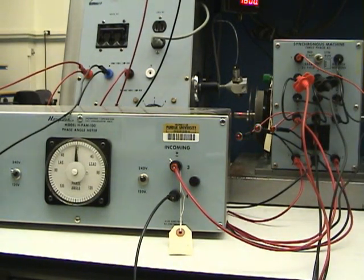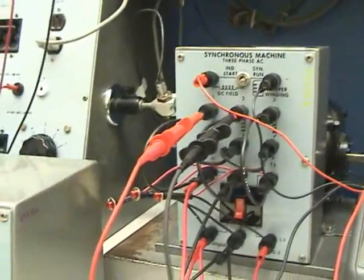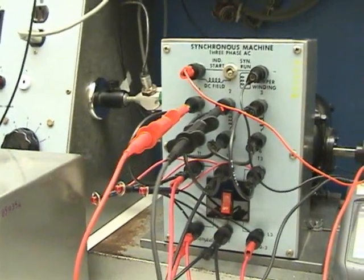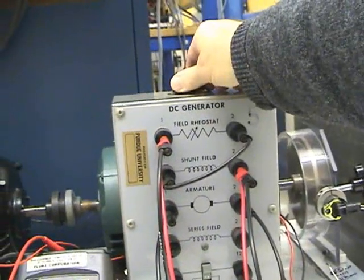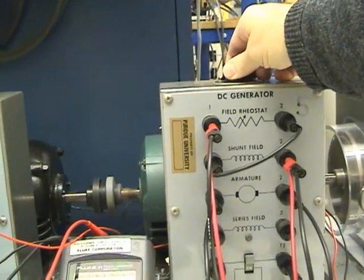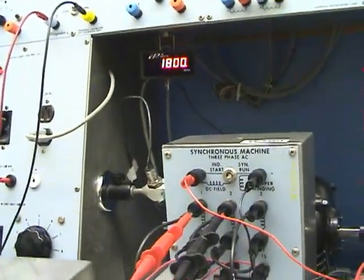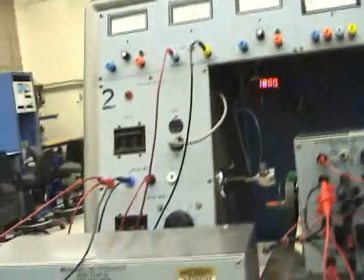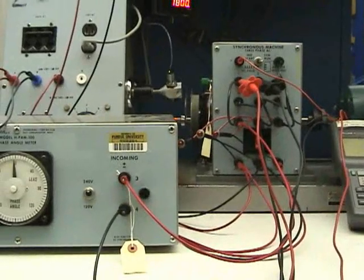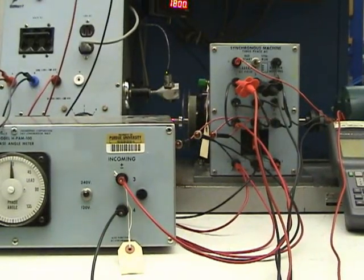And so as it comes up to zero, I've hit the switch, locked it in. Now the machine is running in synchronism, and I can do anything I want to the machine essentially, and it's not going to change speed. And so if I adjust, for example, the rheostat here, it has no effect on the speed of the machine. It stays right at 1800 RPM. So this is the proper procedure for synchronizing your machine, and you'll be doing this in the laboratory experiment today.